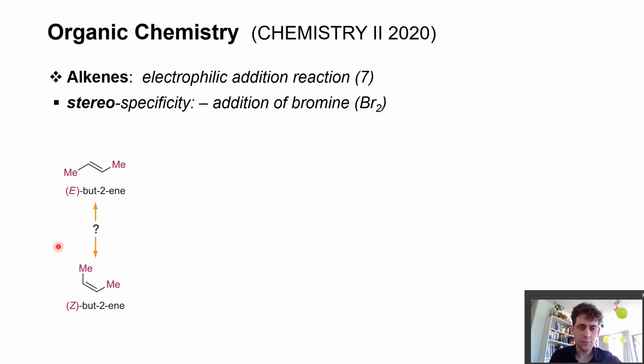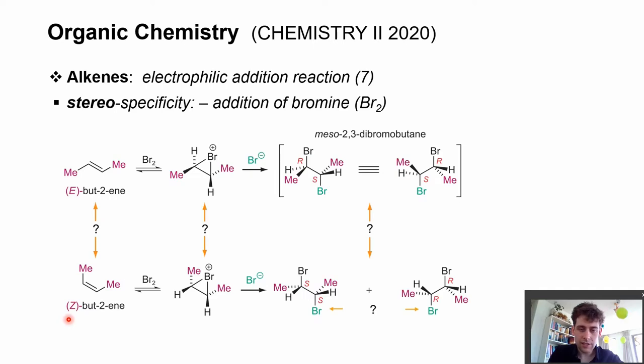What happens if we start with two different alkenes—one the E-alkene and on the other side the Z-alkene? How does this influence the stereospecificity? You see the reactivity here and you see four question marks.